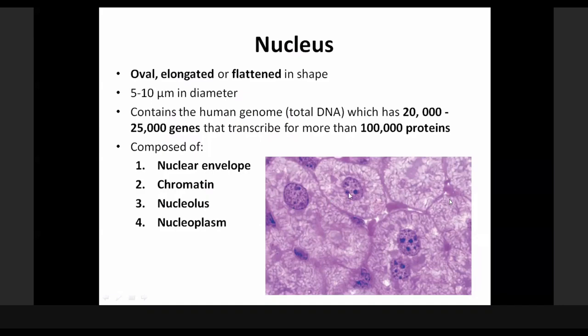The next component we are going to look at would therefore be chromatins. We also have one or multiple densely marked regions within the nucleus. When they are present, they are not more than 10 — they don't even reach that number. I will tell you soon why they cannot exceed 10. These densely marked regions found within the nucleus are the nucleolus.